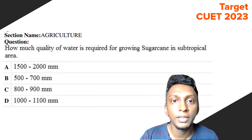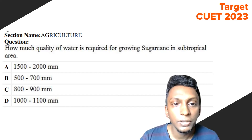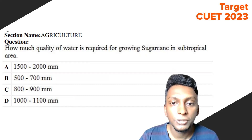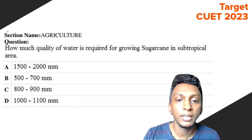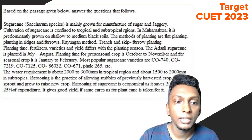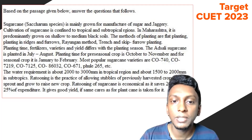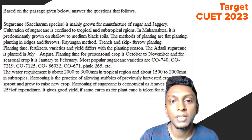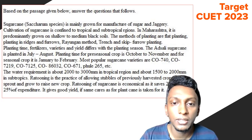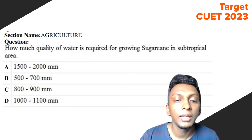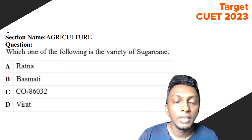Question 4: How much quantity of water is required for growing sugarcane in a subtropical area? The passage states the water requirement is about 2000 to 3000 mm in tropical regions and about 1500 to 2000 mm in subtropics. So the answer for the subtropical area is 1500 to 2000 mm — Option A.